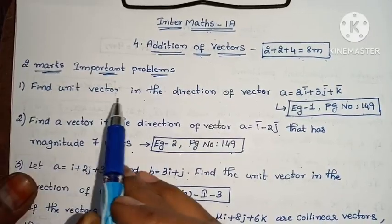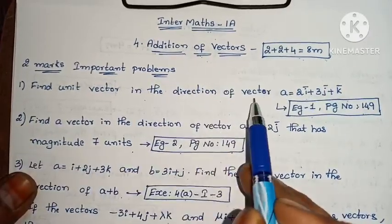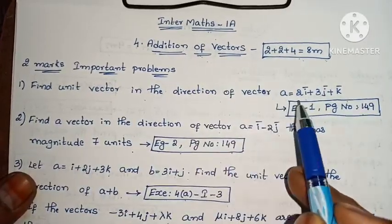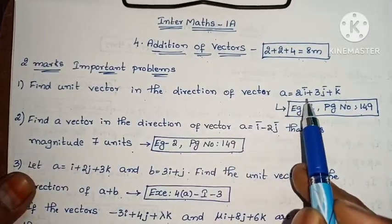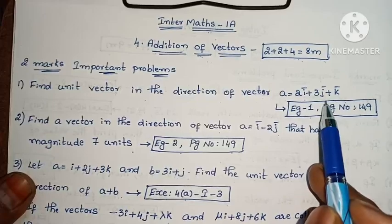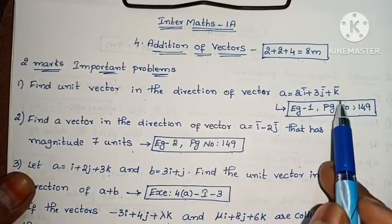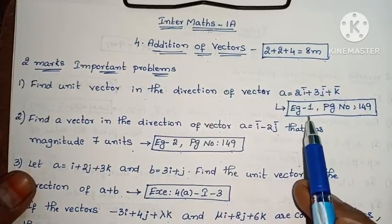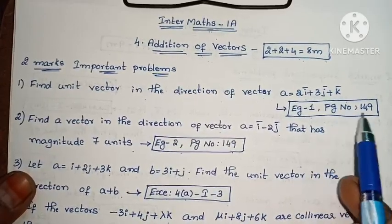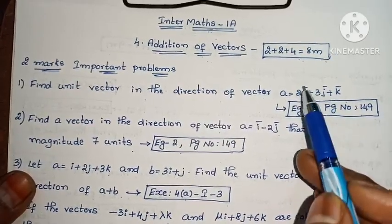First one: Find the unit vector in the direction of vector a equals to 2i + 3j + k. Example 1, page number 149.